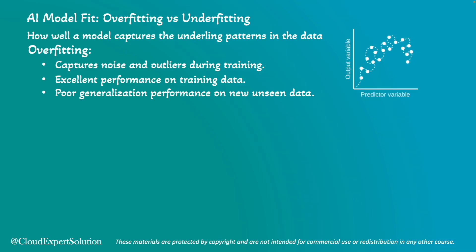Similarly, an overfitting model performs well on the training data but fails on new data. If you see this graph, all the data points are exactly fitting on the training set — that is an example of overfitting.